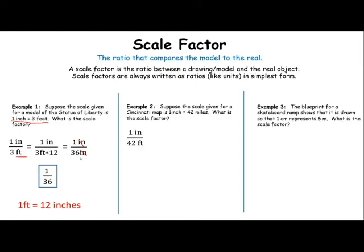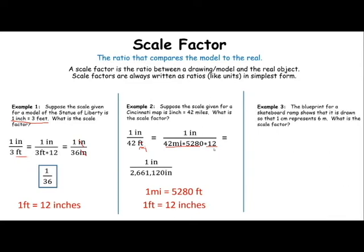Example 2, I have 1 inch is 42 miles. I happen to know that 1 mile is 5,280 feet, and I happen to know that 1 foot is 12 inches. So if I have 42 miles, 42 times the 5,280 will tell me how many feet I have. And then, if I multiply it by 12, that's going to tell me how many inches I have. This comes out as 1 inch to 2,661,120 inches, or since the units now match, it's a ratio of 1 to 2,661,120.